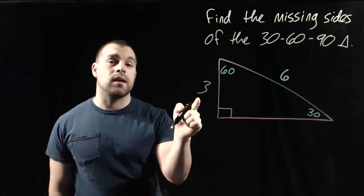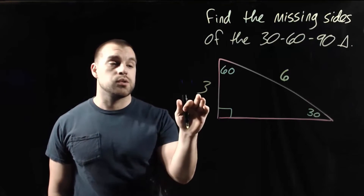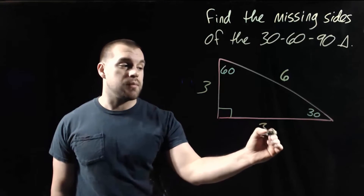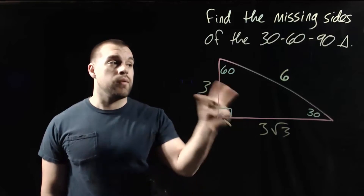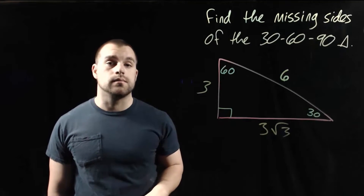Then we can use that 3 to find the length of the longer leg. We take 3 times the square root of 3, and then we've got all the missing lengths of our triangle.